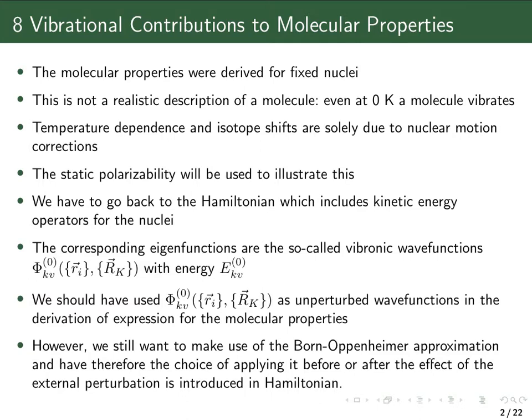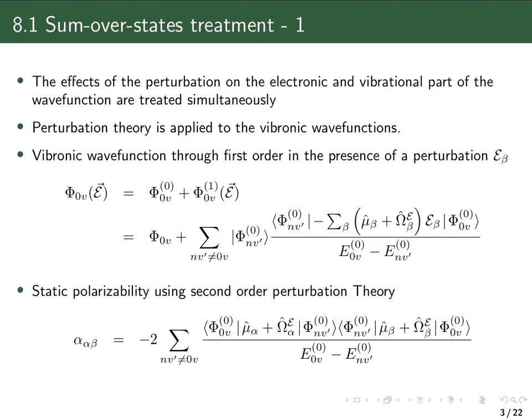This lecture, titled sum-over-states treatment, addresses applying the perturbation simultaneously to the electronic and vibrational parts of the wave function — that is, applying it to the full vibronic wave function. We apply the perturbation first, and then later make the Born-Oppenheimer approximation. Following perturbation theory as in chapter 3, we expand the perturbed vibronic wave function in a perturbation series, stopping after the first term: the unperturbed vibronic wave function plus a first-order correction, which is expanded in the complete set of unperturbed vibronic wave functions.